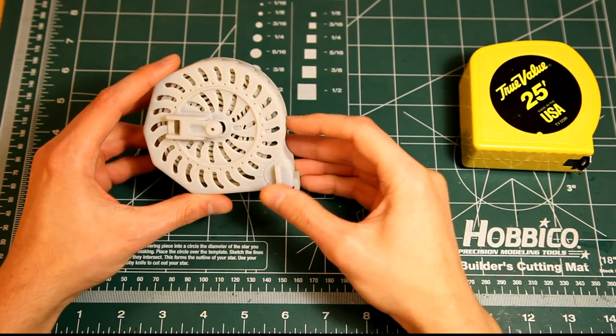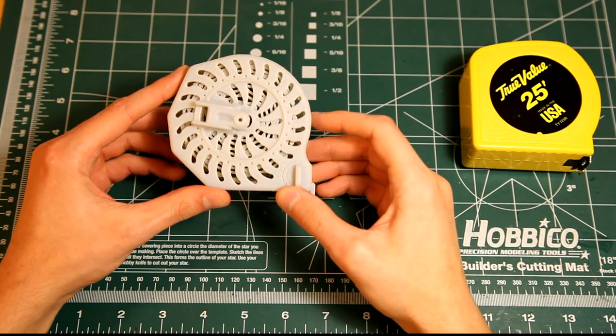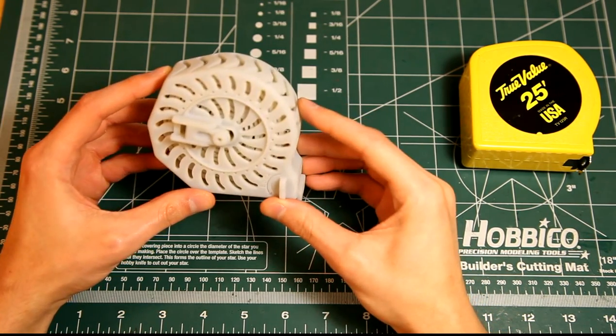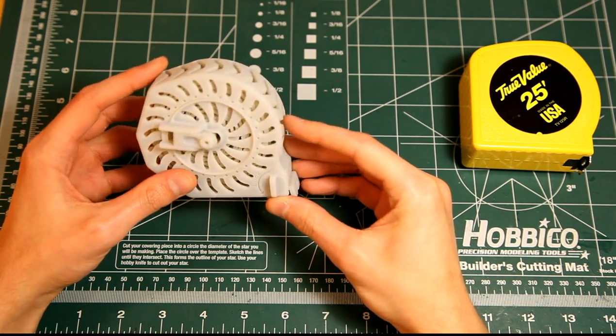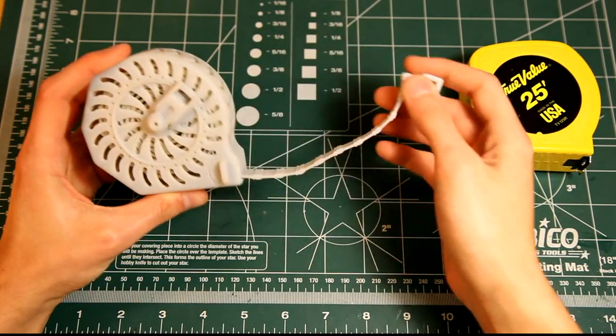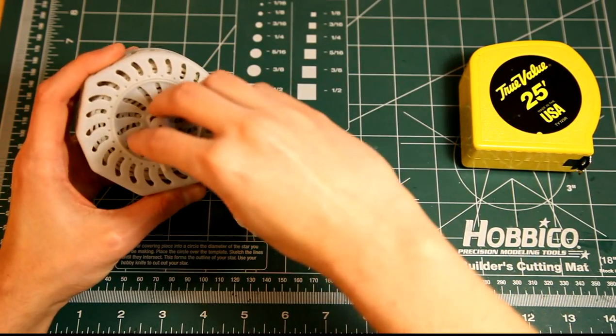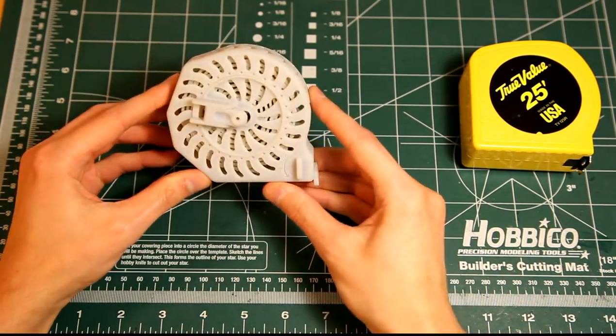Now, like with my 3D printed dial calipers, this tape measure was printed already assembled exactly like you see it here. There was no gluing or snapping parts together, the tape was not printed outside the body. No, it was printed exactly like this.